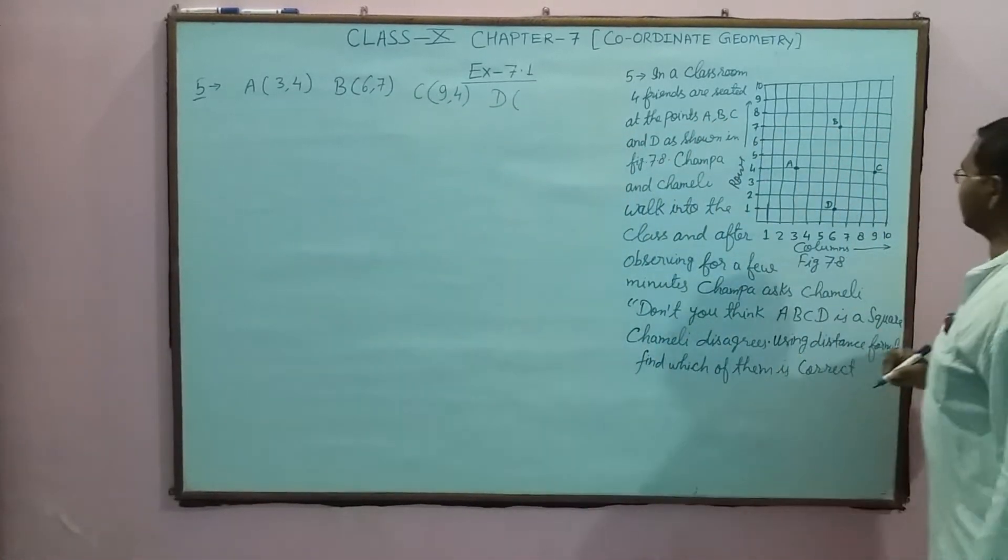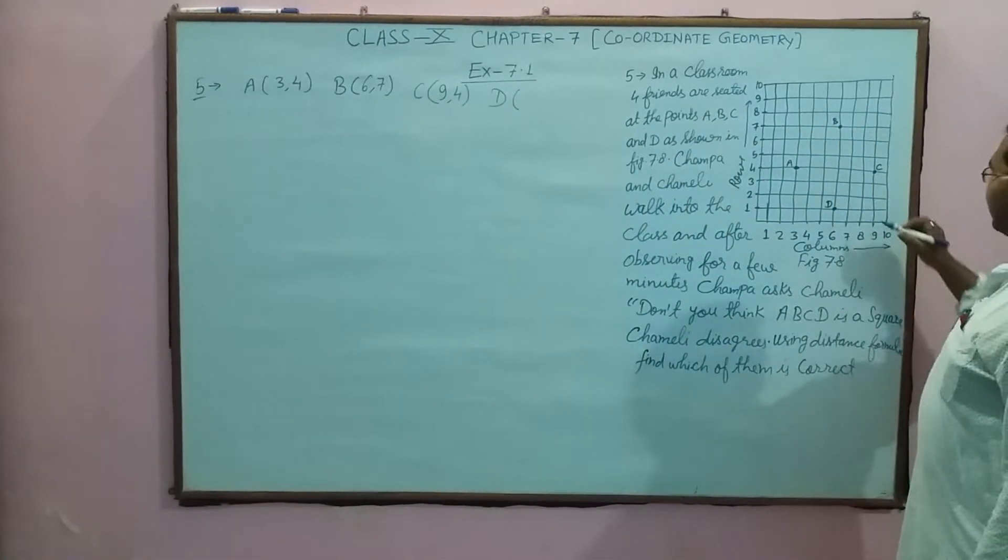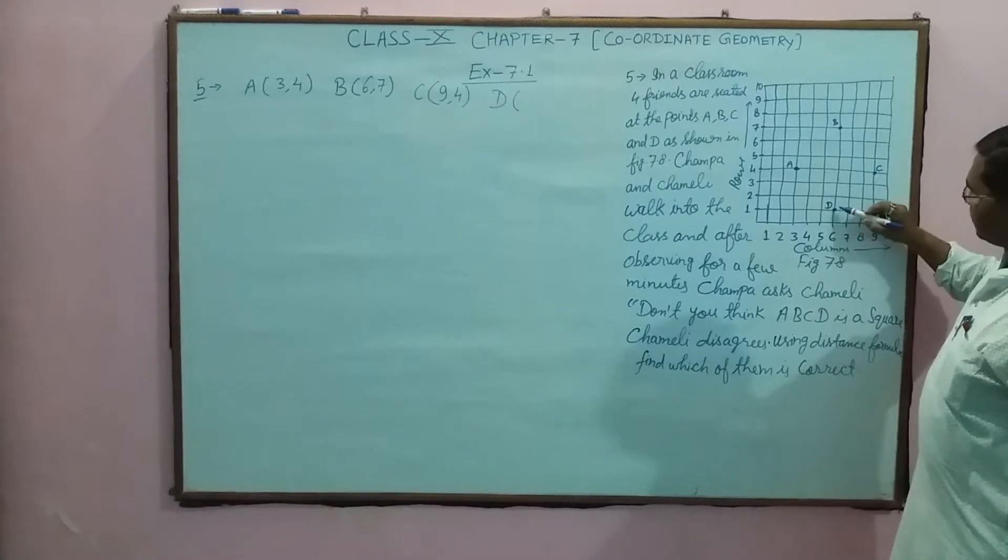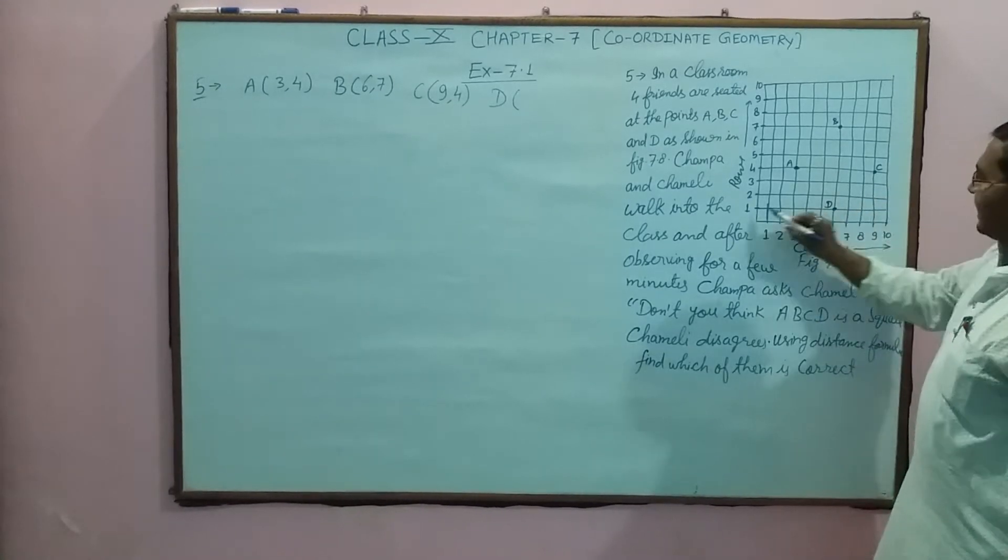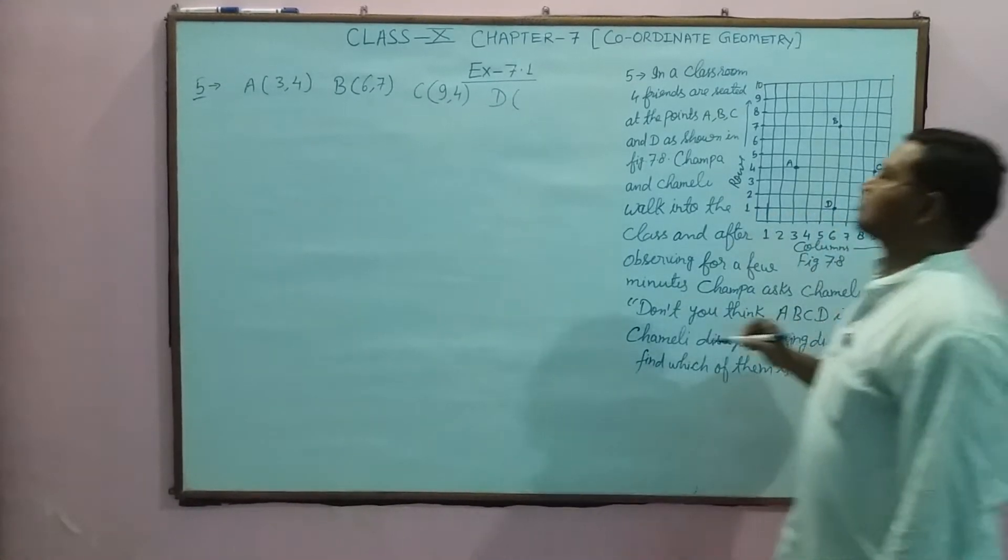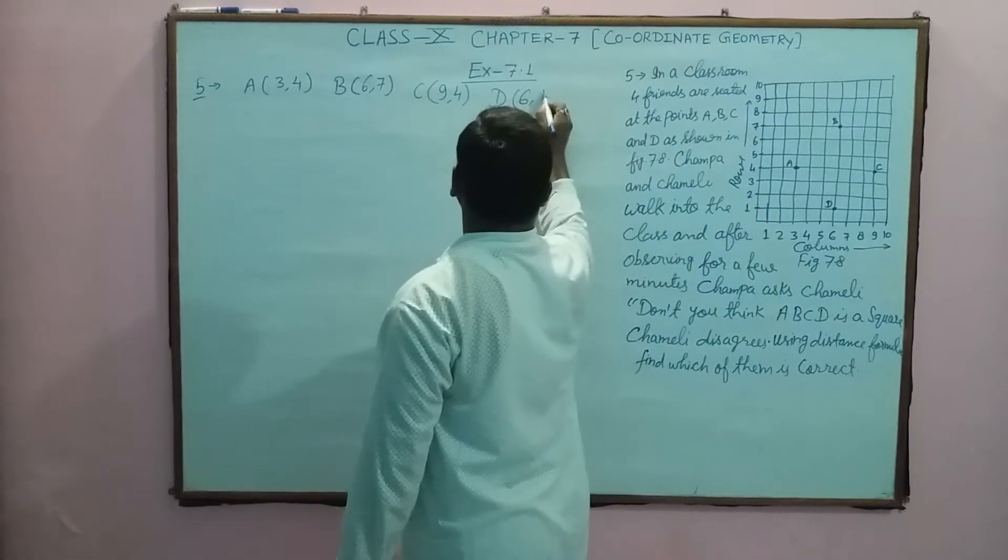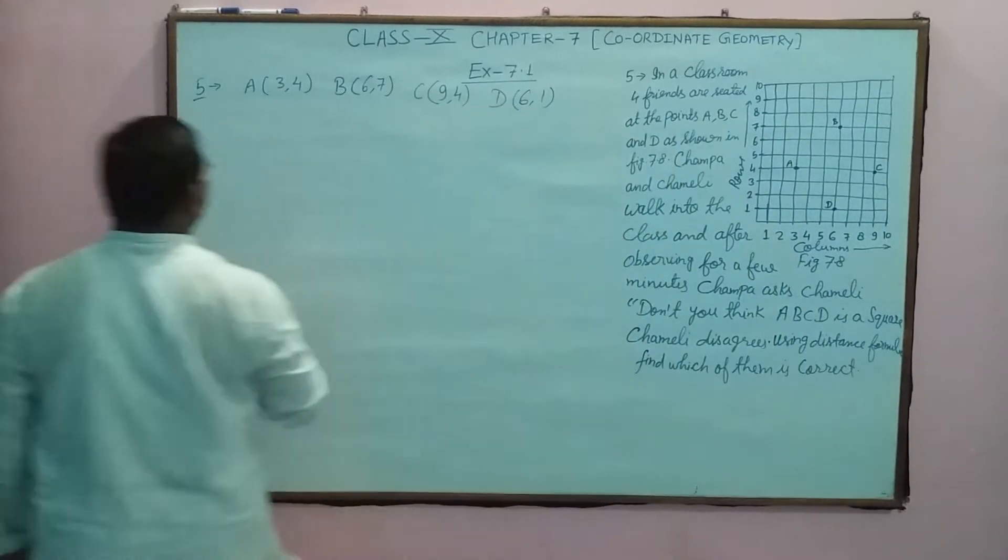C point, X-axis 9 and Y-axis 4, this is (9,4). D point coordinate, X-axis 6 and Y-axis 1, this is (6,1). These are the 4 points.